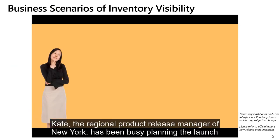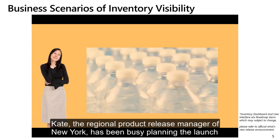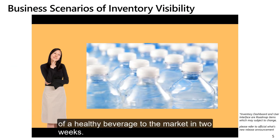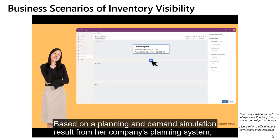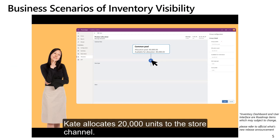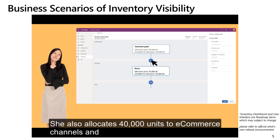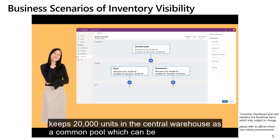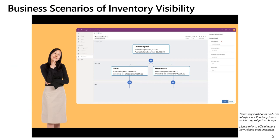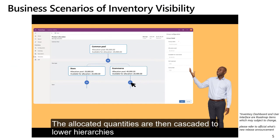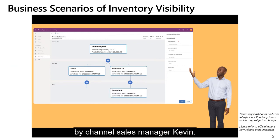Kate, the Regional Product Release Manager of New York, has been busy planning the launch of a healthy beverage to the market in two weeks. Based on that planning and demand simulation results from her company's planning system, Kate allocates 20,000 units to the store channel, 40,000 units to e-commerce channels, and keeps 20,000 units in the central warehouse as a common pool which can be distributed to any channels if needed. The allocated quantities are then cascaded to lower hierarchies by channel sales manager Kevin.